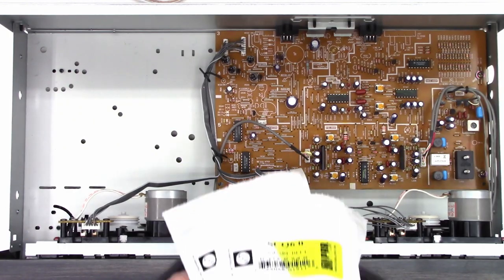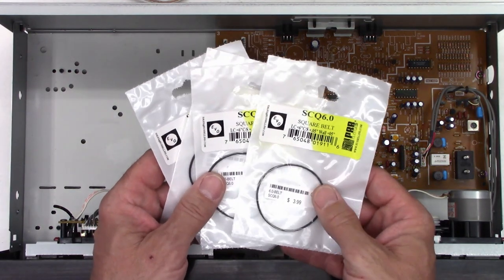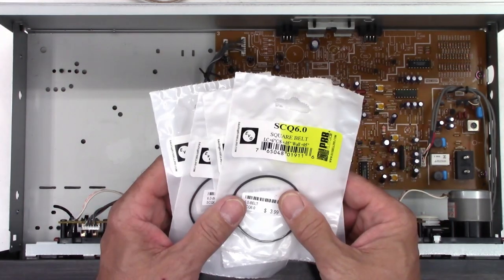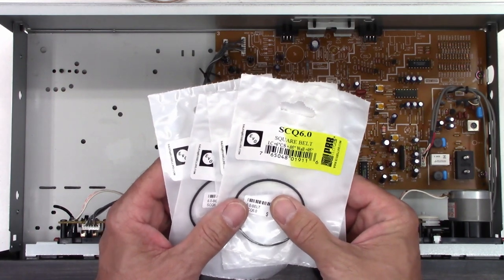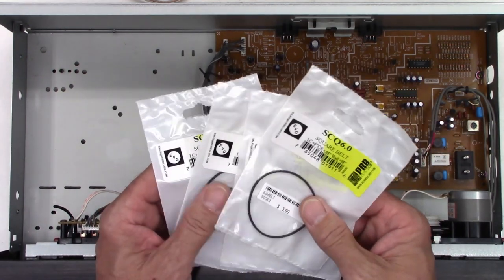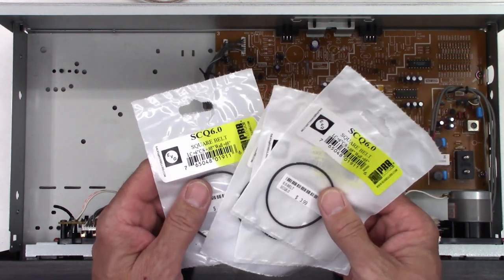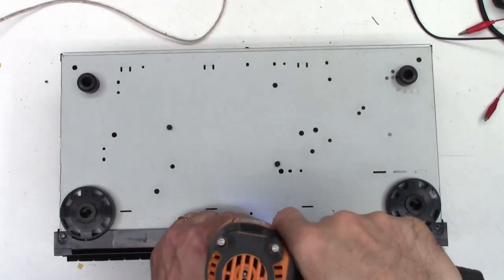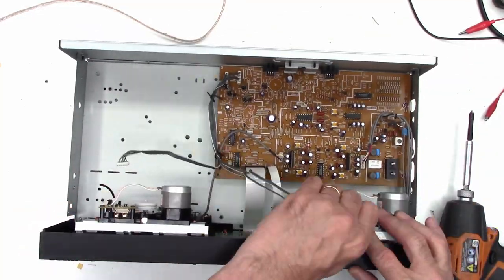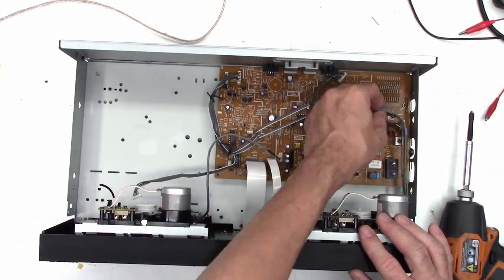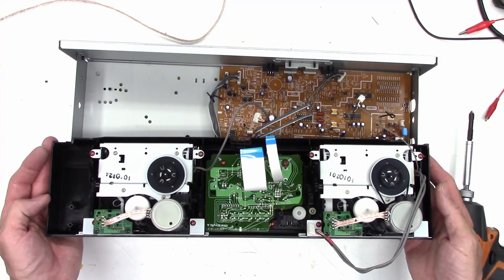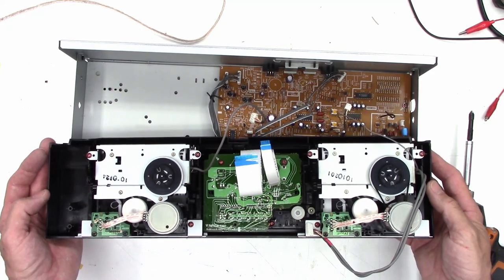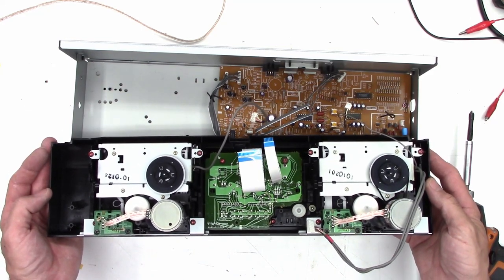Okay, so the customer approved the estimate. I have four SCQ 6.0 belts from EVG Electro Voice Game is their name, PRB over here. So let's go ahead and tear this unit apart and we'll put these belts in it and hopefully it gets up and running. Alright, so I have the front completely disconnected from the main unit. Now we'll go ahead and pull the decks out individually and change the belts.